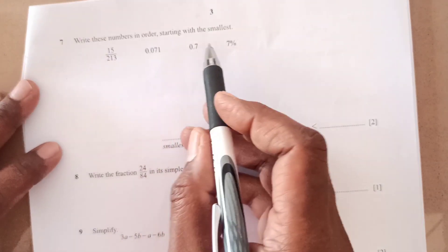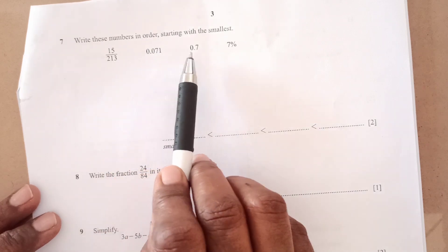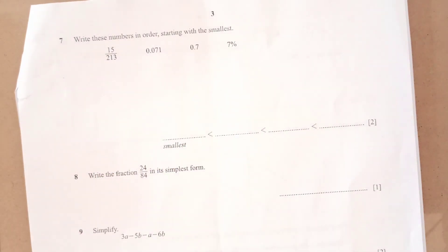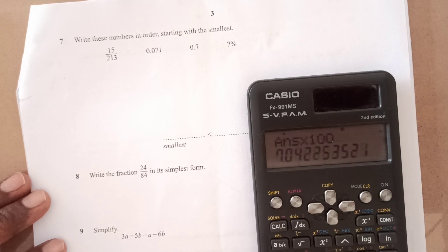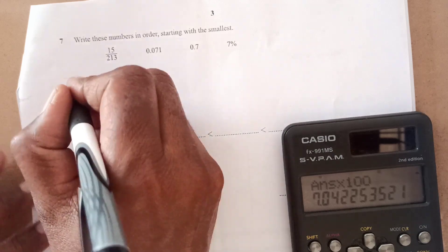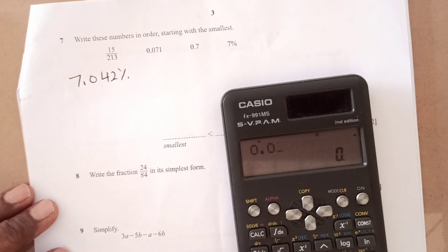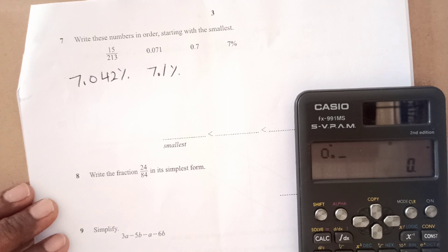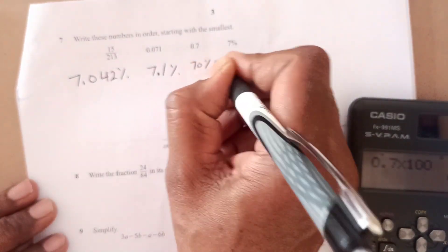Now, number 7, write these numbers in order starting with the smallest. If you look at the numbers, all the numbers are given in different form. This is a fraction. This is decimal, decimal and percentage. The best way is to convert them into the same. If we convert into the percentage, that is going to be so easy. To convert that, we are just going to multiply here by 100, 15 divided by 213 times 100. So this is 7.042 percent and then this multiplying by 100 only 0.071 times 100. So this is 7.1 percent and this is 0.7 times 100 is 70 percent and this is 7 percent.